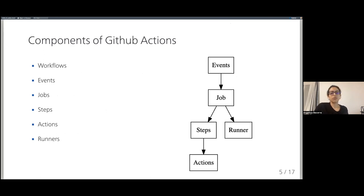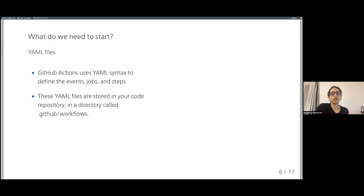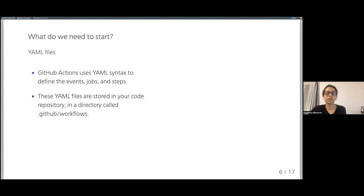What are the components of GitHub Actions? Basically, we have workflows — these are mainly sequential steps, but we can also have workflows running in parallel or dependent on each other. Those workflows always contain elements we call events, jobs, steps, actions, and runners. GitHub Actions uses YAML syntax to define events. Those YAML files are documents stored in your GitHub repository, specifically in a directory called `.github/workflows`.